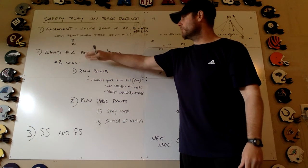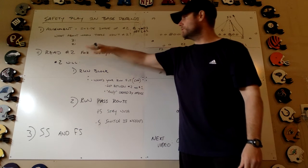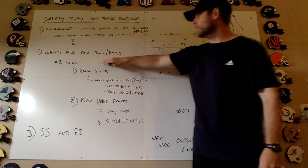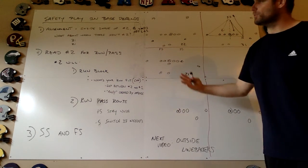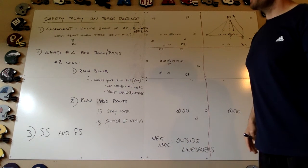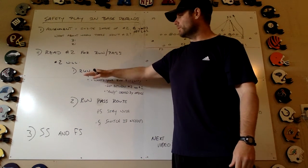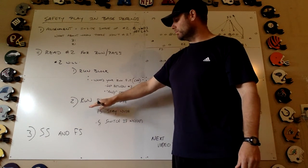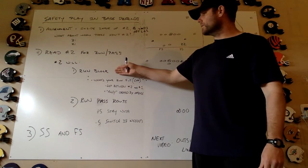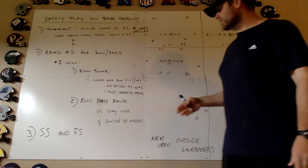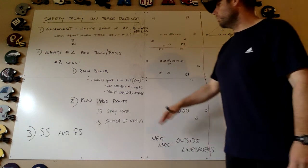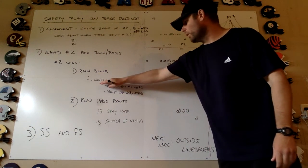So there are some differences at 22, 31, and 21. Now, when you're reading number two, you're focusing in and trying to read: is it a run or a pass? You're trying to get a run-pass read by looking at number two. Number two will either run block or he'll run a pass route, and when he run blocks there are some different things to consider.